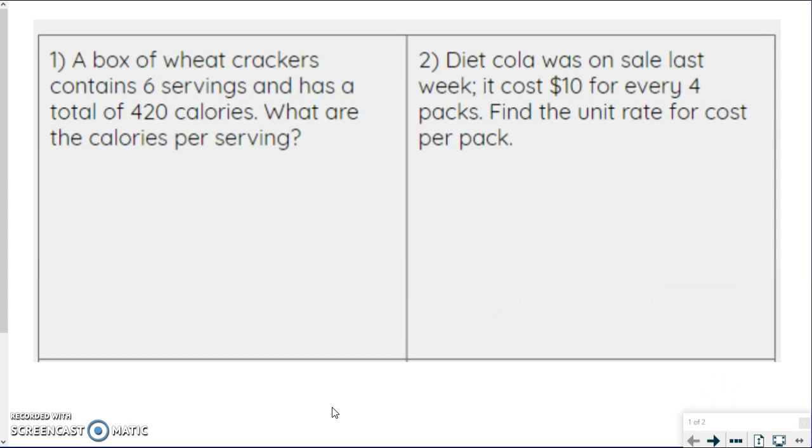A box of wheat crackers contains six servings and has a total of 420 calories. What are the calories per serving? So the key words I'm picking up on is they give us number of servings, a number of calories, but really the question is asking for calories per serving. And as we know, per, we know that's a rate, specifically a unit rate, because notice how it says serving singular. So that means just one. We want to know how many calories in one serving.